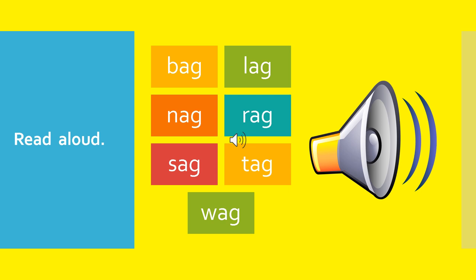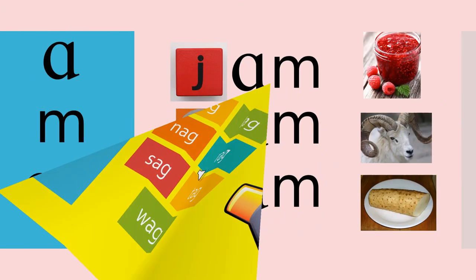Let's spell together. B - Ag - Bag. L - Ag - Lag. N - Ag - Nag. R - Ag - Rag. S - Ag - Sag. T - Ag - Tag. W - Ag - Wag.